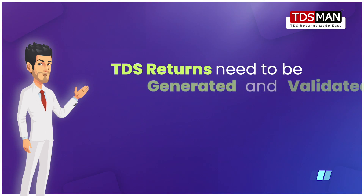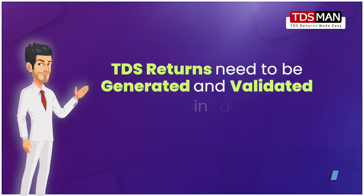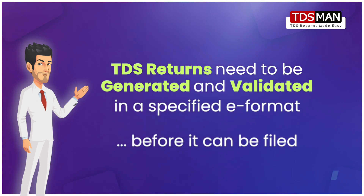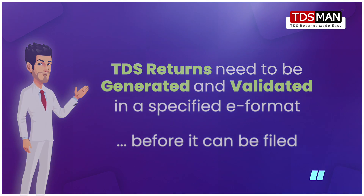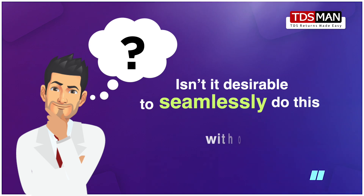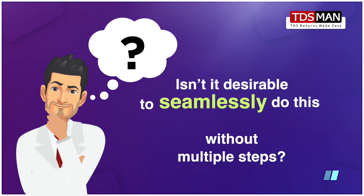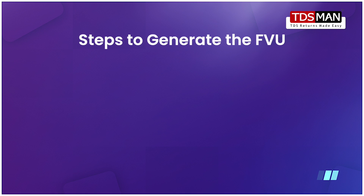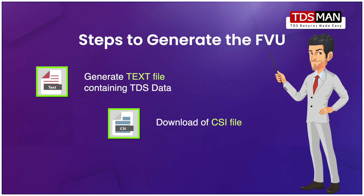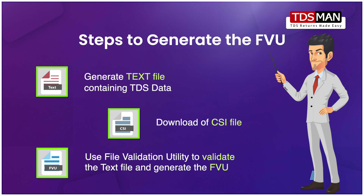TDS returns need to be generated and validated in a specified e-format before they can be filed. Isn't it desirable to seamlessly do this without going through multiple steps? These steps are: generating a text file containing TDS data, downloading the CSI file, and using the department's file validation utility to validate the text file and generate the FVU file.